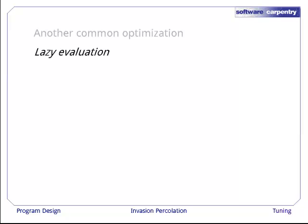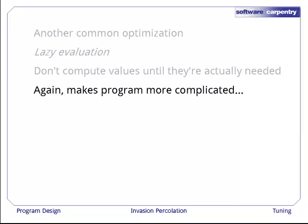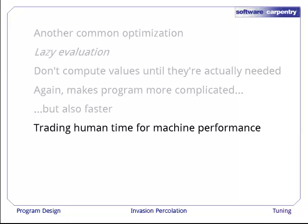This is an example of another commonly used way to optimize programs. It's called lazy evaluation. We're not computing values until they're actually needed. We only ever generate the random numbers that we're going to use. Now this does make the program more complicated, but it also makes it a lot faster. What we're doing is trading human time, i.e. programming effort, for higher machine performance. And this again is a very common theme in computing.